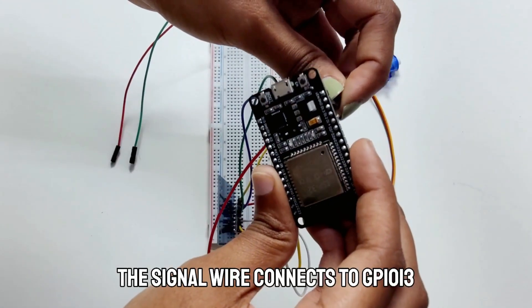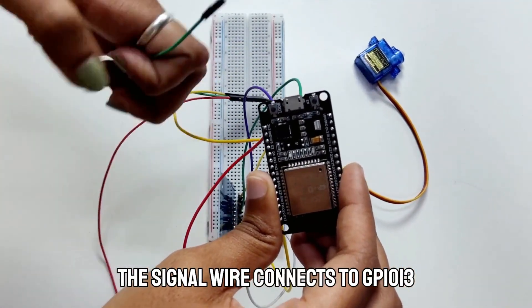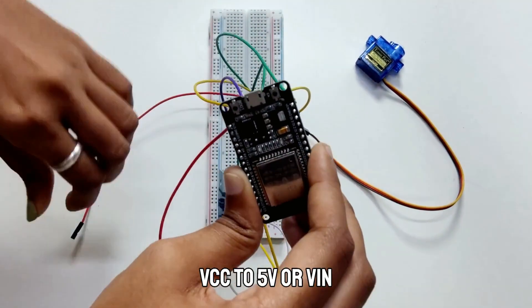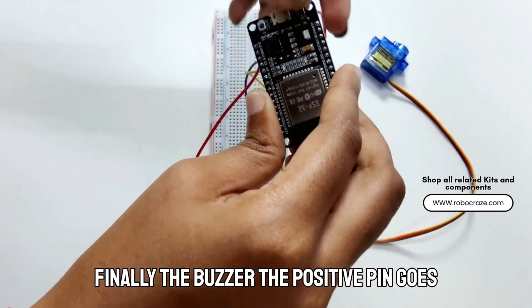Next, the servo motor. The signal wire connects to GPIO13, VCC to 5V or VIN and ground to ground.